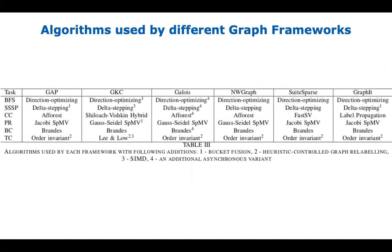The paper also has a table of algorithms used by each framework compared to GAP's baseline. A key difference is in PageRank: GraphIt, SuiteSparse, and GAP use Jacobi algorithms, while GKC, Galois, and NW Graph use the Gauss-Seidel algorithm. Gauss-Seidel lets you update intermediate values before finishing a pass, and combined with asynchrony — as Galois does — it gives quite a performance boost.